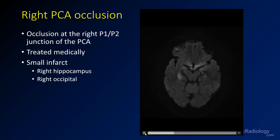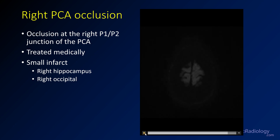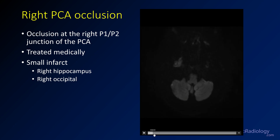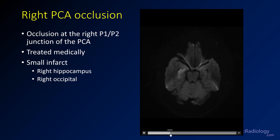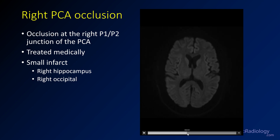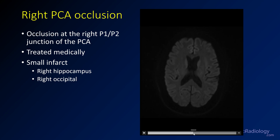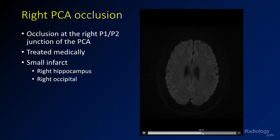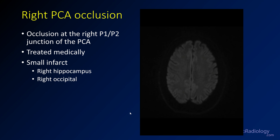I'll scroll through the diffusion here for you. You can see medial temporal lobe involvement there involving the hippocampus, and then a little bit of involvement of the occipital lobe, but not a whole lot — particularly considering the proximal nature of that thrombus and the fact that the perfusion deficit was pretty big. So probably got some benefit from the medical therapy there.